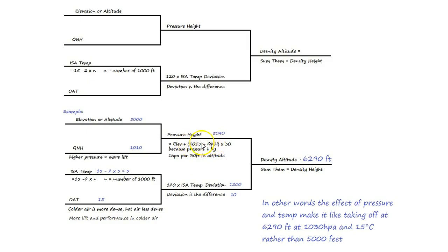Let's take that example now. If we're at QNH 1,000, so we go 1,013 minus 1,000, we end up with 13. 13 times 30 - 10 times 30 is 300 and another 3 times 30 is 90 - so that's 390 feet. The effect of a QNH of 1,000 is 390 feet. In other words, because we're taking off at low pressure, it's going to be like having 390 feet extra altitude, because in low pressure the air is less dense and therefore there's less lift available.